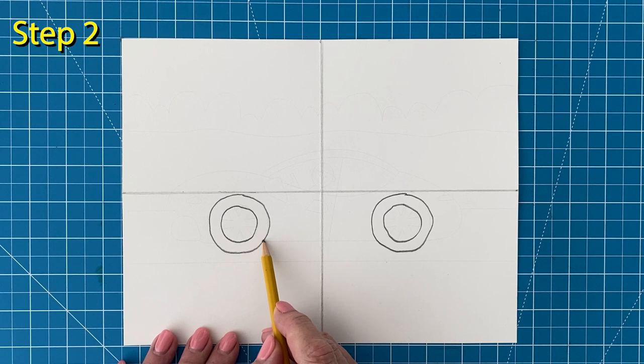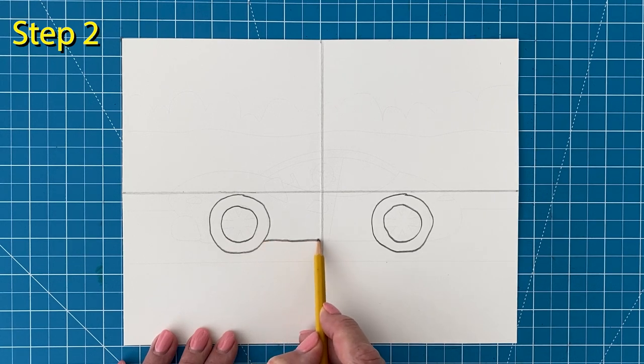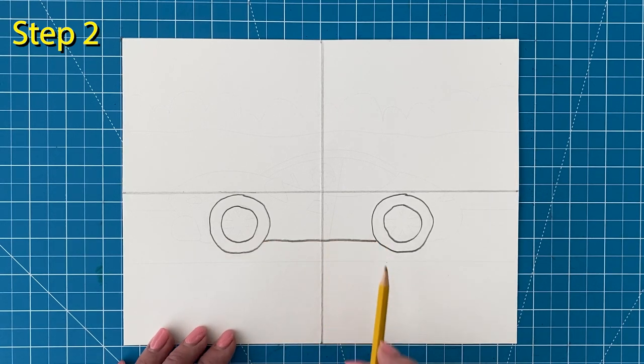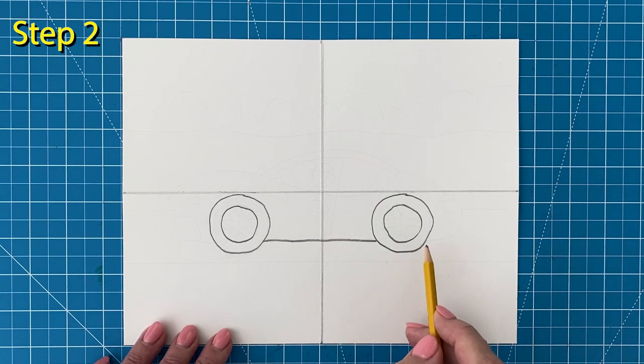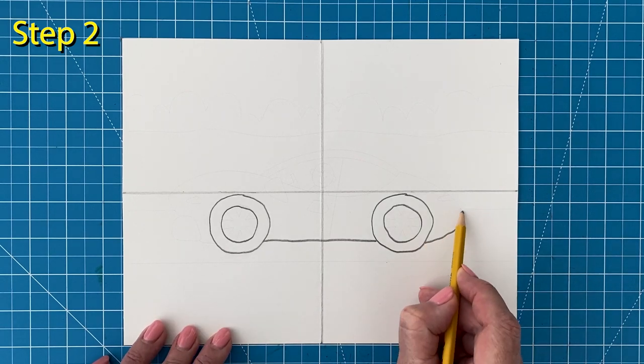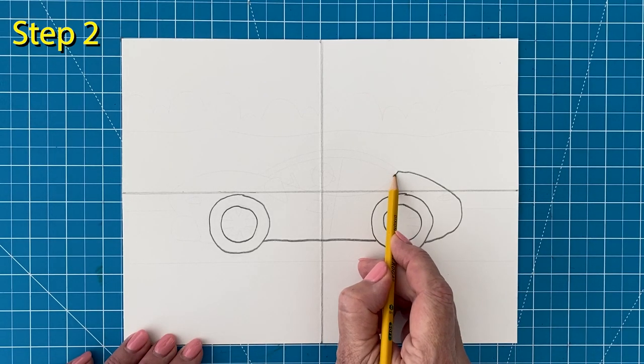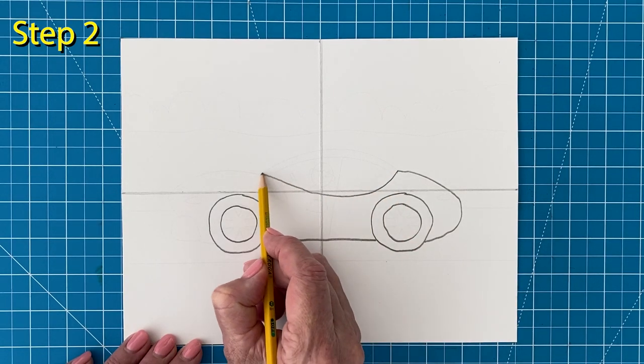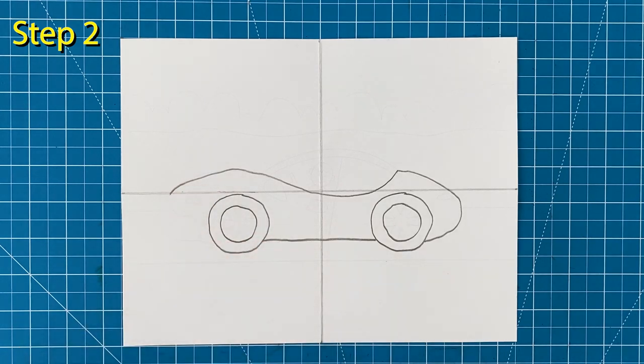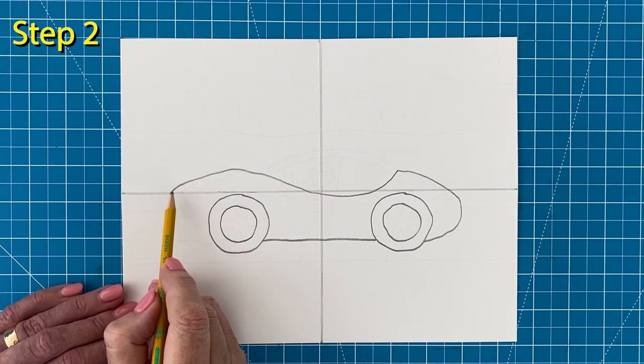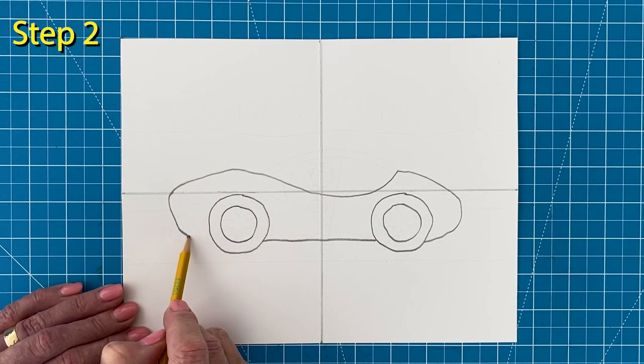Step number two. Start the bottom body of the car with a line between the wheels, and then continue that line up and over the back wheel. Curve that line down and then back up and over the front wheel. And finish the car body with a front that angles in a little bit.